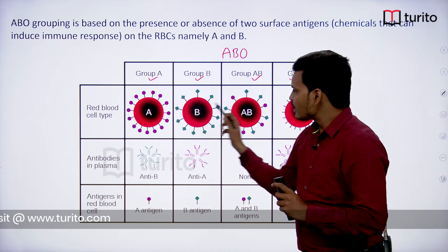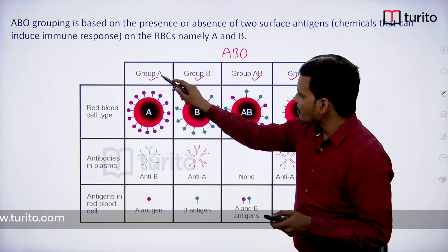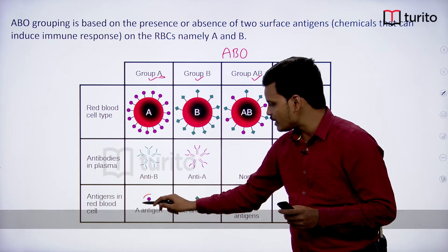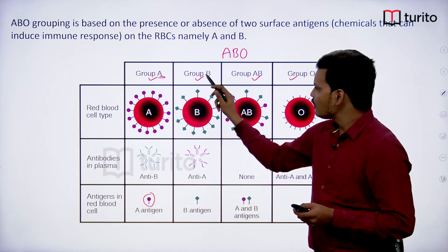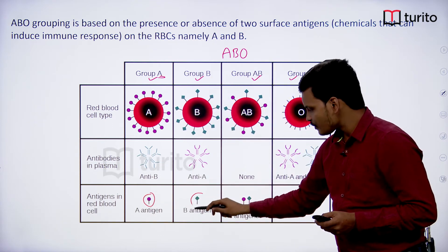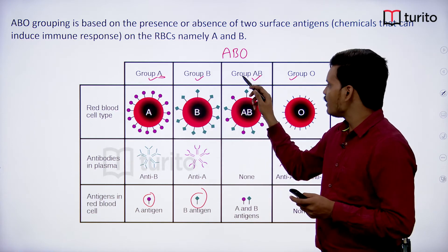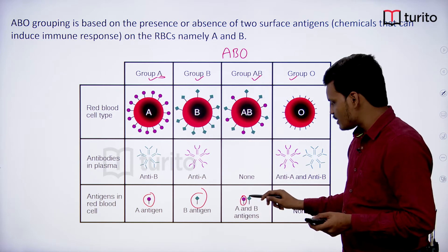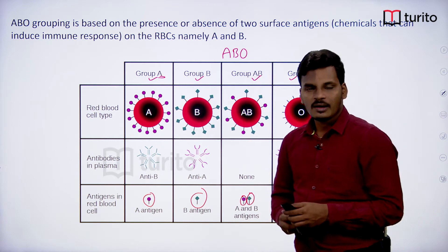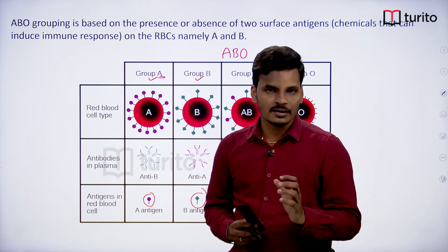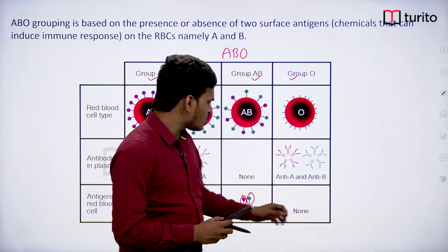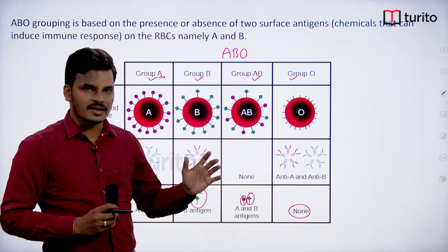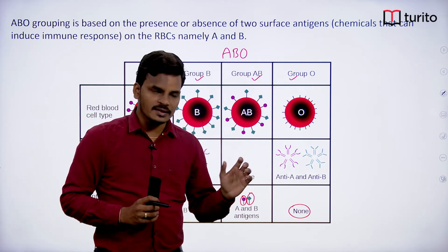When we say blood group A, the antigen present on the red blood cell is antigen A. For blood group B it is antigen B, and for AB — as you might guess — both antigen A and antigen B are present. For blood group O, there is no specific antigen present; it has no A or B antigen.